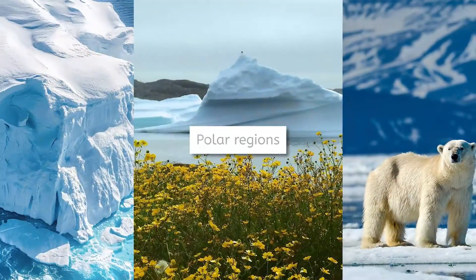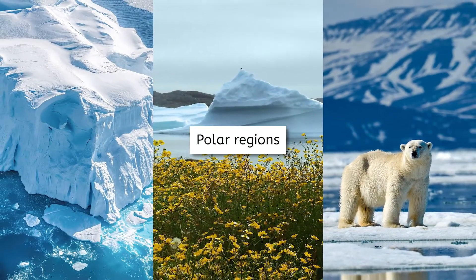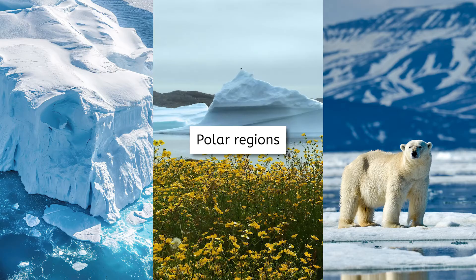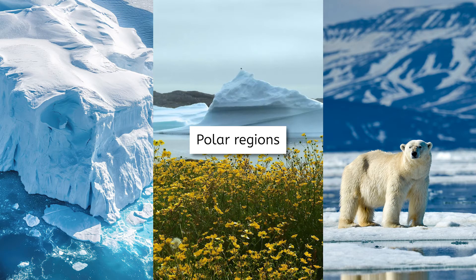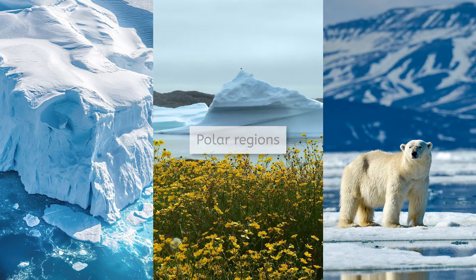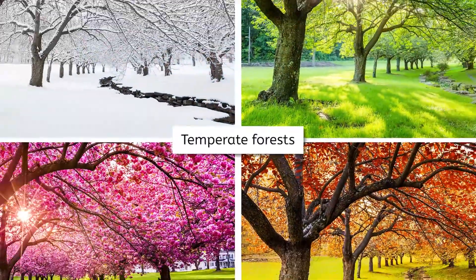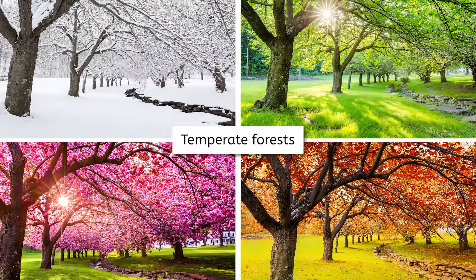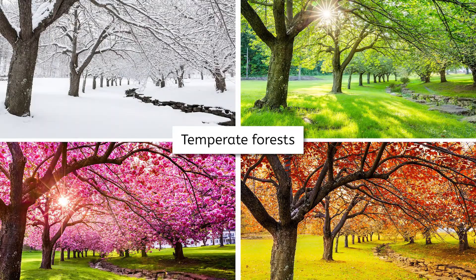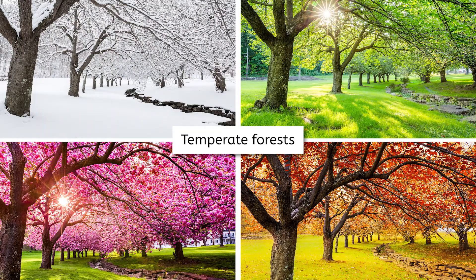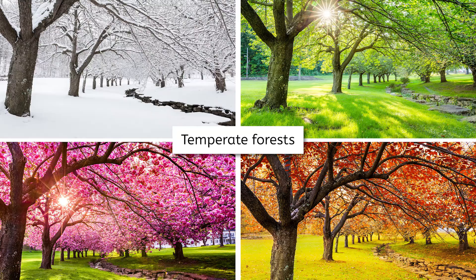In polar regions, low temperatures limit evaporation, and what little precipitation they do get falls as snow, contributing to massive ice sheets. Temperate forests have a more balanced water cycle and experience all four seasons with varying precipitation levels throughout the year, allowing these ecosystems to support a rich diversity of life.